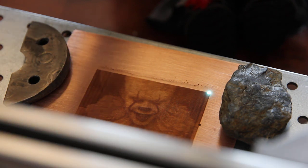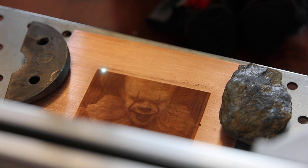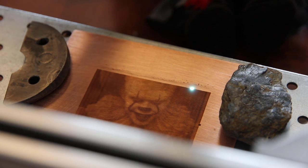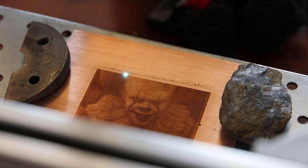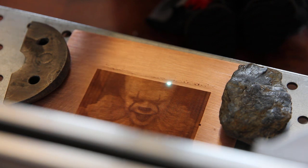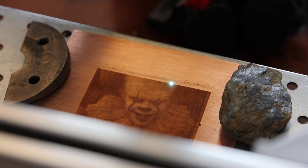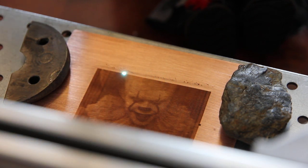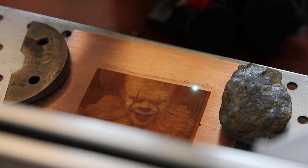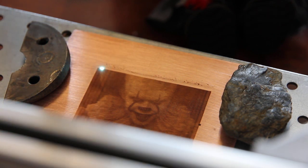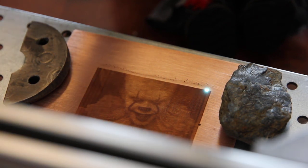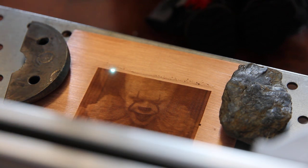The engraving speed is 2000 millimeters per minute and the maximum power for photo engraving is 25% only, minimum is zero. I use grayscale format on Lightburn software.